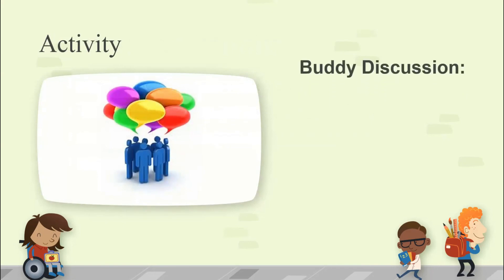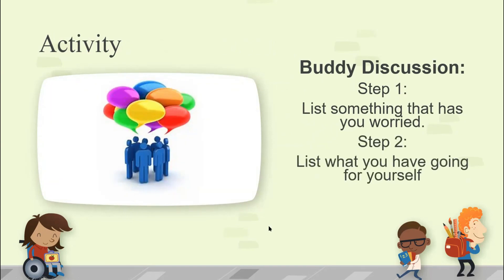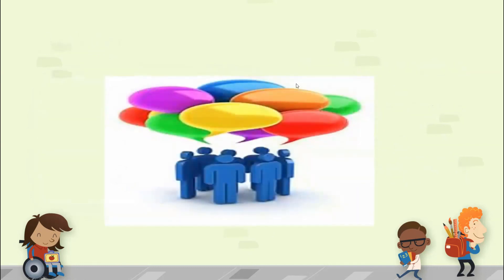In our buddy activity, we're going to break into smaller groups for about 20 minutes so you can chat and do this activity. Step one: list something that has you worried — and since you're in a small group with just your buddy, you can talk openly. Step two: list what you have going for yourself. For example, if you're worried that next school year you won't have any friends, list all the things about you that could make people want to be your friend, like 'I'm nice' or 'I'm kind,' and discuss it with your buddy.